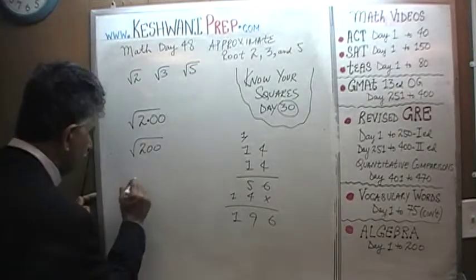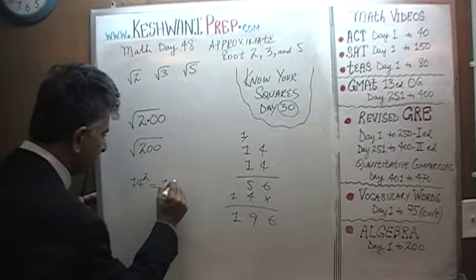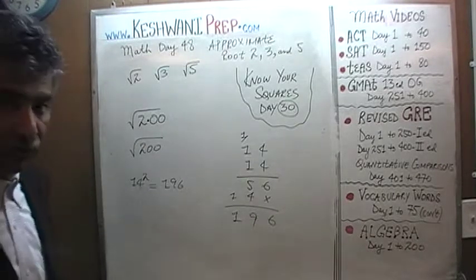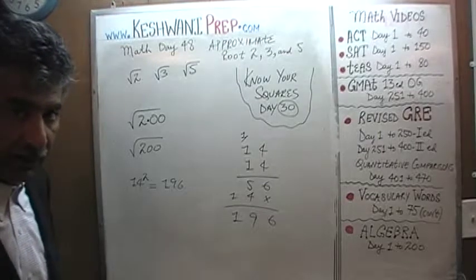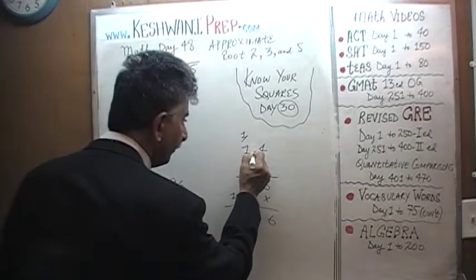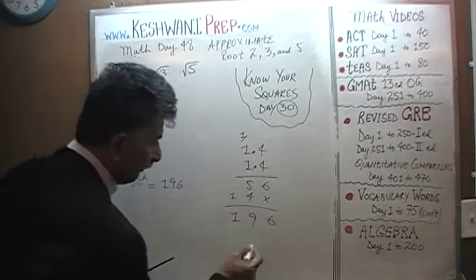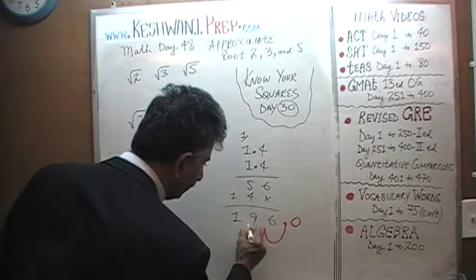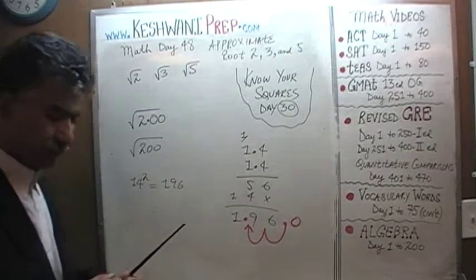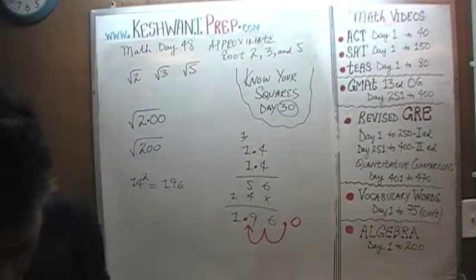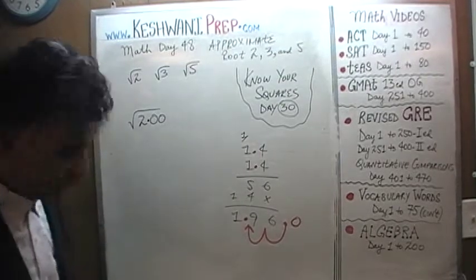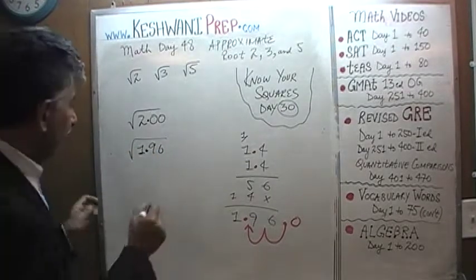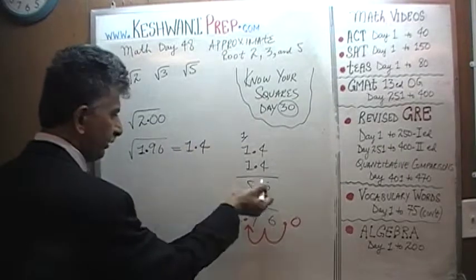Now that we know that 14 squared is 196, where does it get us? Well, what this work tells us is that if 14 times 14 is 196, then it tends to result that if you were to multiply 1.4 times 1.4, then simply, all we have to do is take our decimal from here, take our decimal from here, and move it two places, 1 and 2, voila, right here, 1.96. What this tells us is that square root of 1.96 is exactly 1.4, it comes right from there.